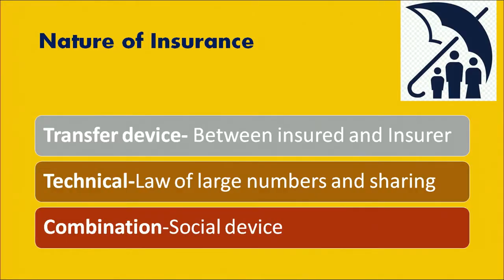There is another school of thought which says that it is a combination of both the transfer device and the technical device, saying that it is a social device. Why is it a social device? Because there are a group of people involved — one person contributing to another's risk and the other contributing back. So we say it is a social device, meaning the insurance gets transferred from the insured to the insurer and also works on a proportionate sharing basis, which is the law of large numbers.